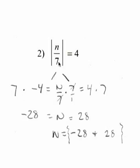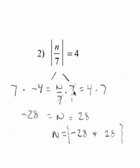The first thing I need to do is get rid of the absolute value bars. So I have n over 7 equal to negative 4, which is right here, and also n over 7 equal to 4. This was n over 7, and I multiplied both sides by 7.